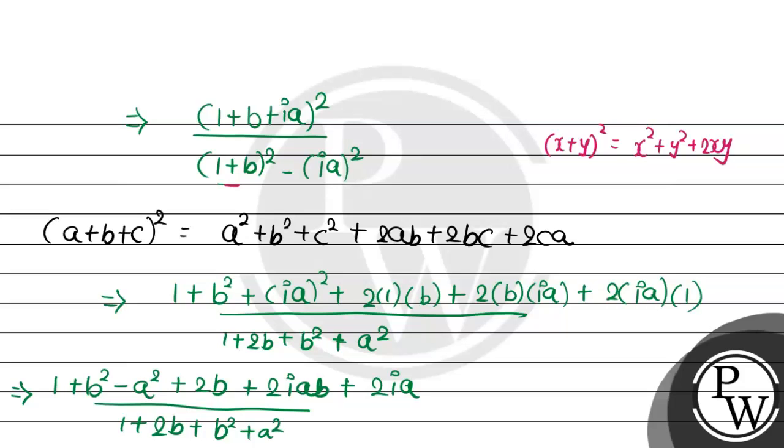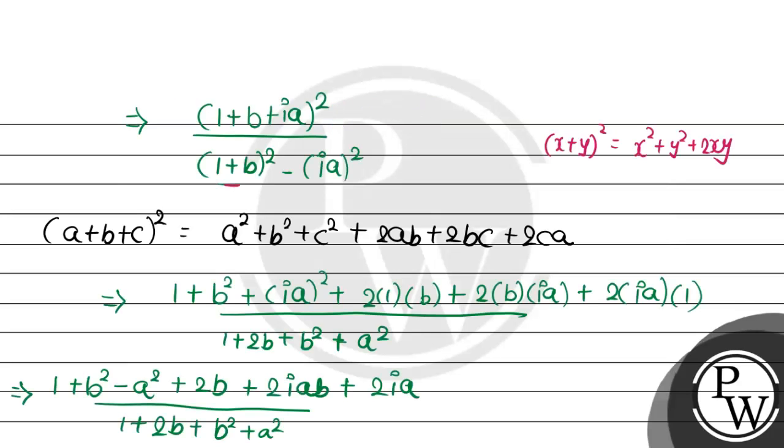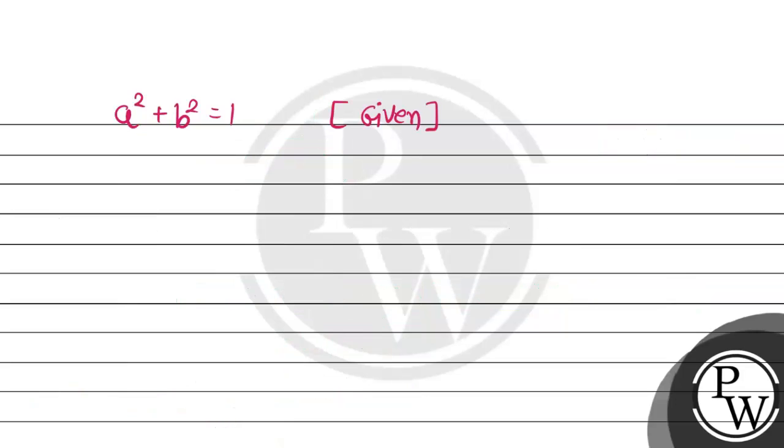Now there is one condition given that a square plus b square is equal to 1. That is given in question, right? In place of 1, substitute a square plus b square. And here, b square plus a square in place of 1 substitute. So we will get in place a square plus b square plus the remaining terms, b square minus a square plus 2b plus 2iba plus 2ia.